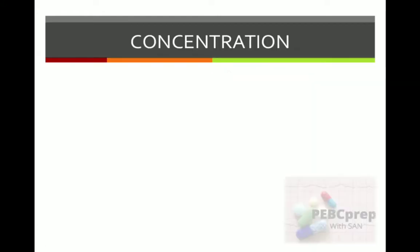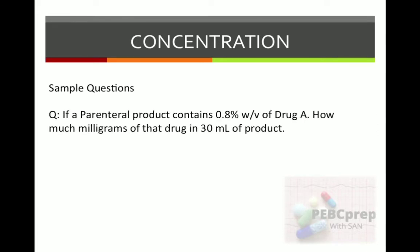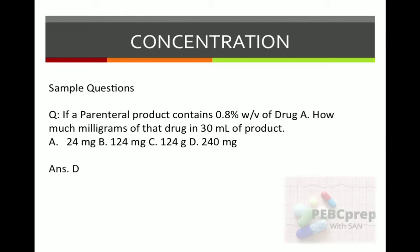First, a sample question on concentration: if a parenteral product contains 0.8 percent weight by volume of drug A, how much in milligrams of that drug is in 30 ml of product? Options: A) 24 mg, B) 124 mg, C) 124 grams, D) 240 mg. The answer is D.